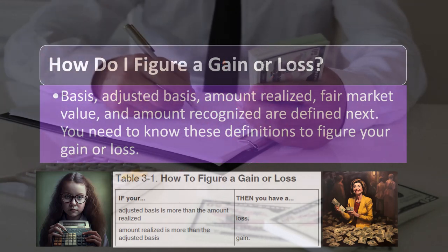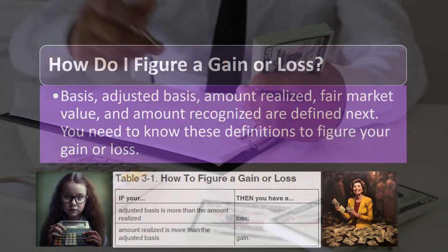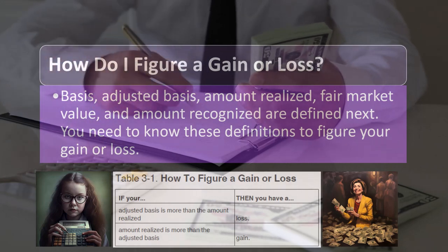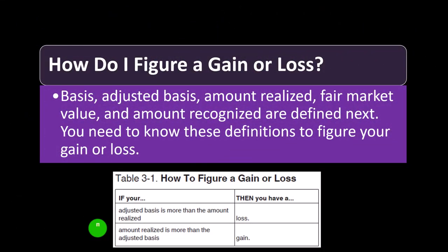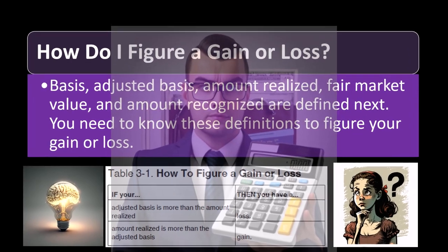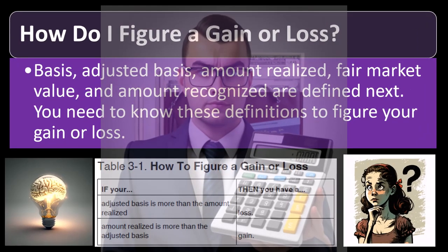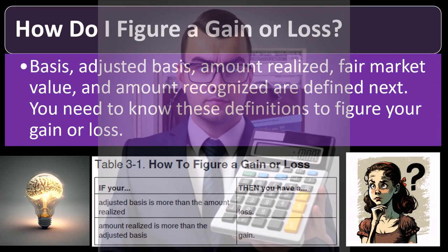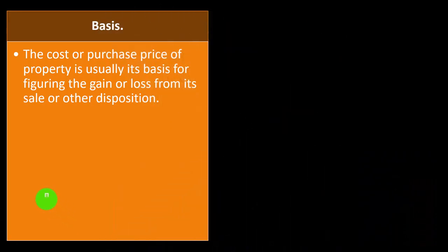The adjusted basis is essentially the cost minus the accumulated depreciation — the amount you've consumed. If you get paid for the sale of the equipment in an amount higher than the adjusted basis, you have a gain. If it's less, you have a loss. The adjusted basis is kind of like the value for tax purposes of the property — then you subtract it from the amount you sold it for.